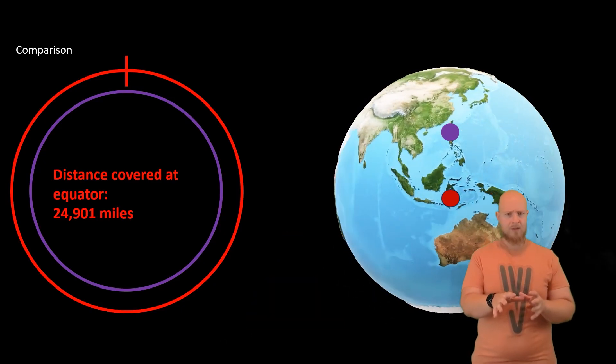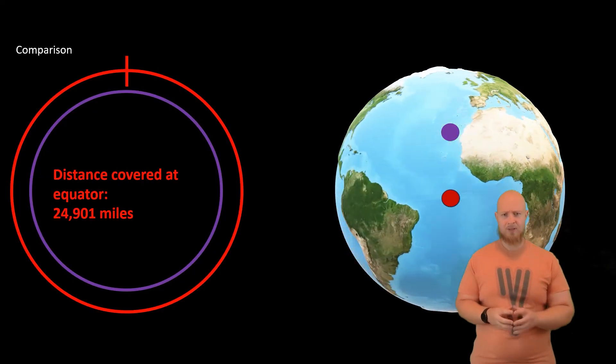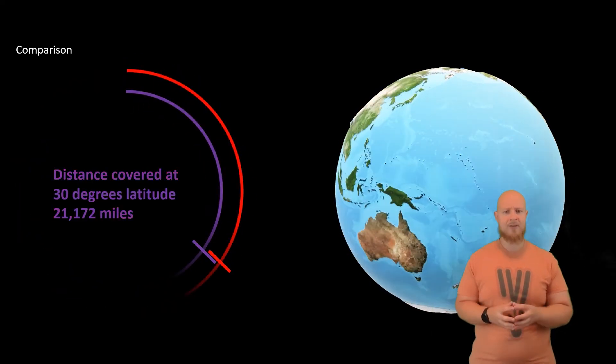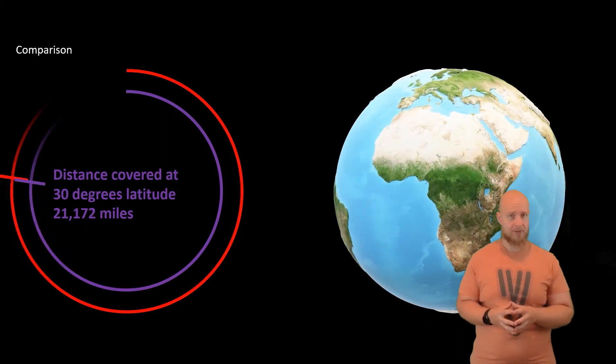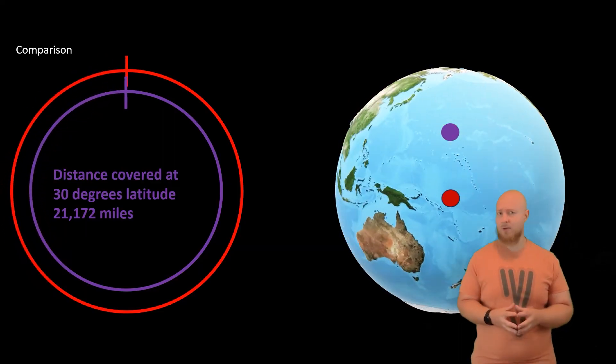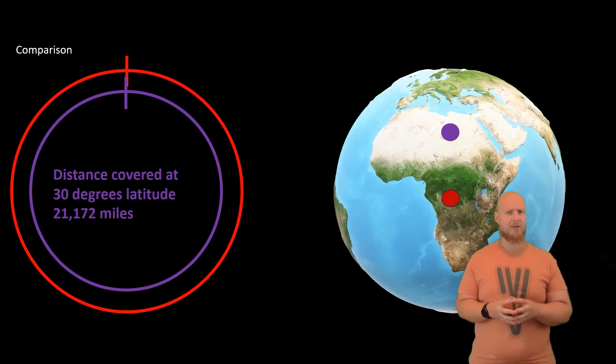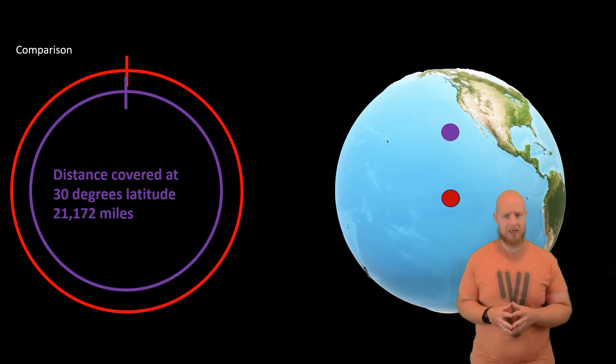However, the earth's circumference at 30 degrees is about 21,172 miles. So an object traveling along the 30 degree parallel is only traveling at 882 miles per hour.